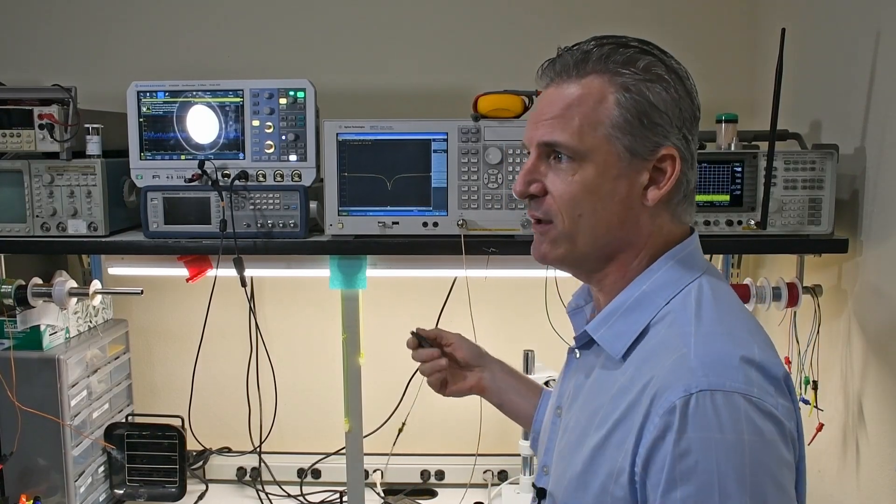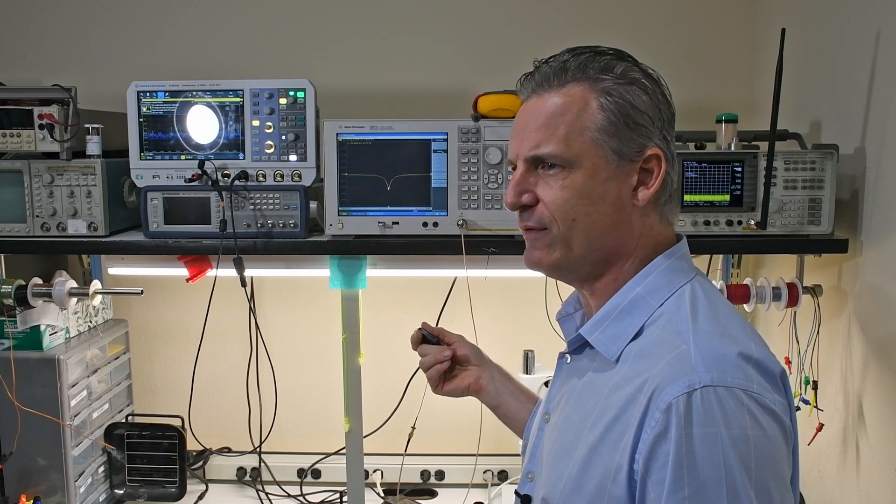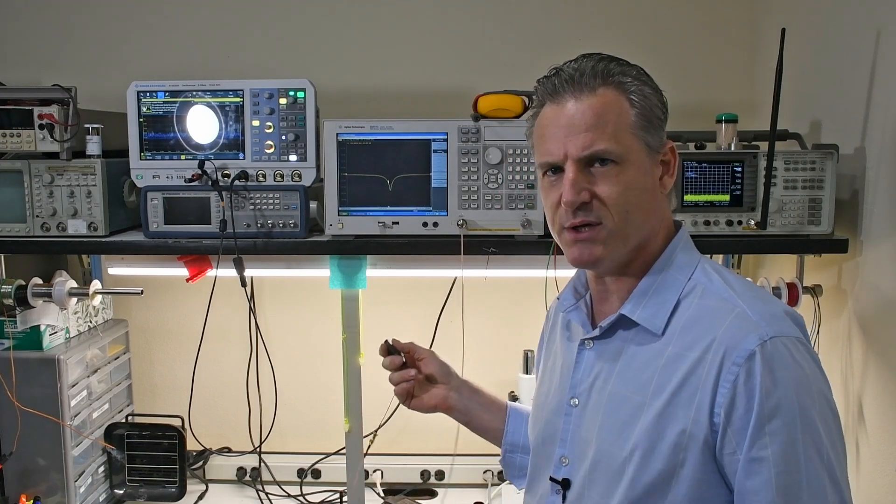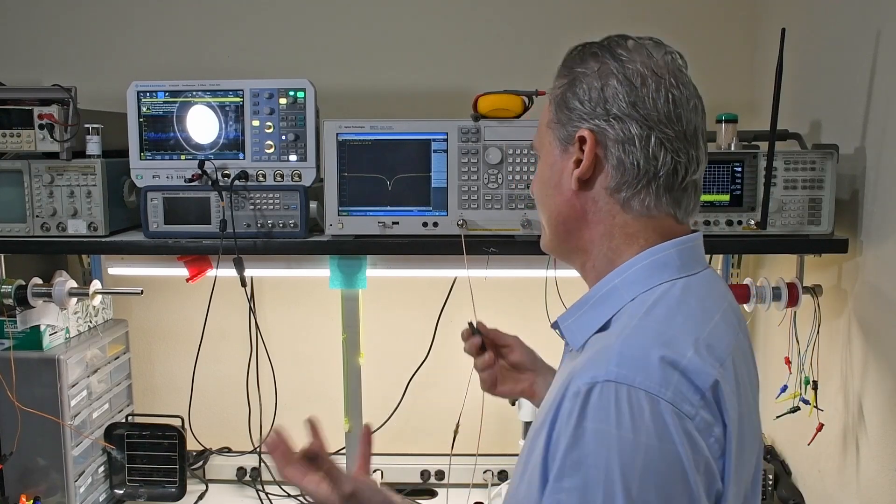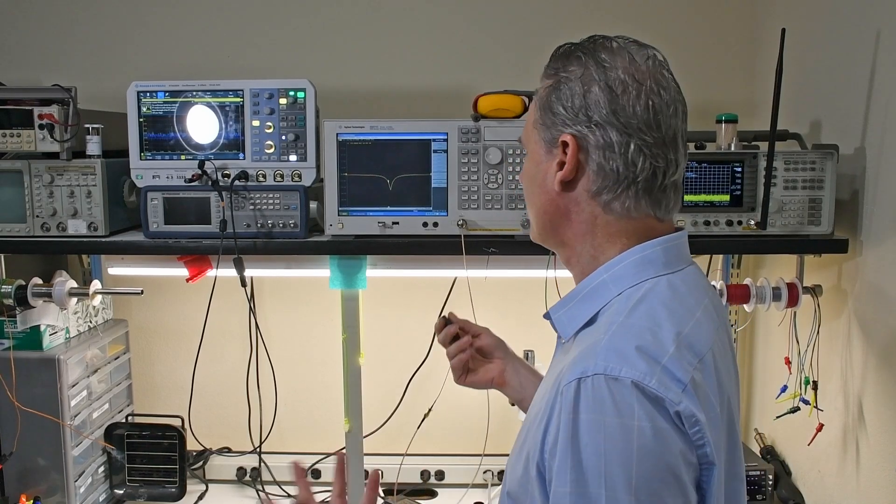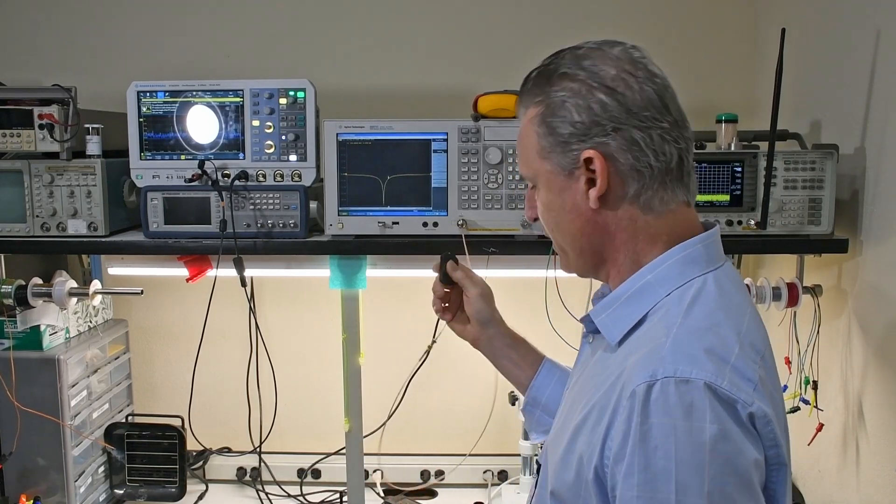There's a competitor's fob out there that claims 750 feet, I believe. And I bought one of theirs and it looks like they're running at about zero dBm as well. From what I can tell, I piped the output right into the spectrum analyzer and I saw that. So this is looking pretty good.